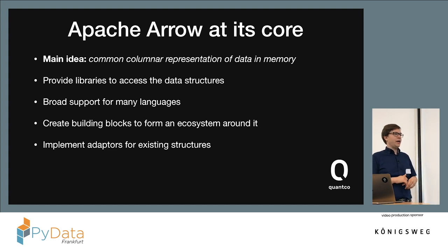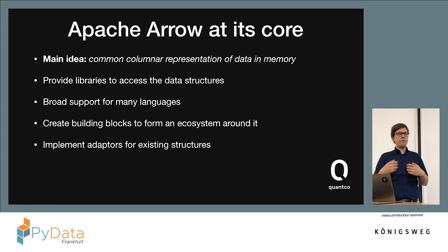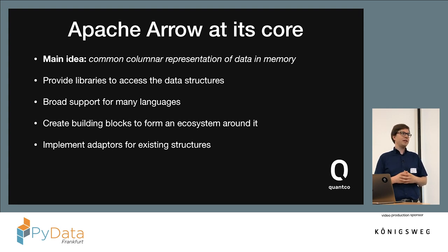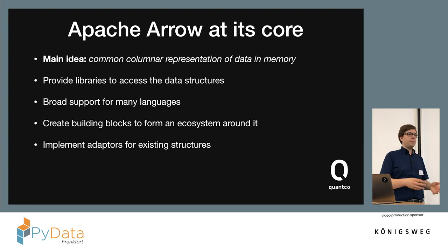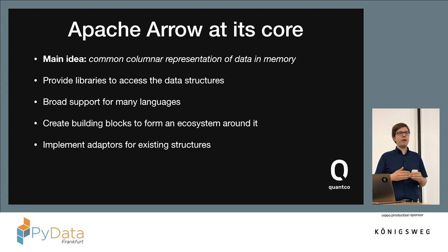Apache Arrow is an open source project with the core idea of defining a standard data structure for columnar or table data. If you know what a data frame is, it defines the memory structure of how a data frame should look in memory, so that if you have different systems, they all have a common denominator to communicate with. In the Apache Arrow project, we also bring you code to actually access this data structure — not just in Python but in a huge set of languages — and we make sure that in each language it's the same structure, so a Python program and a C# program can reference the same memory without copying it.